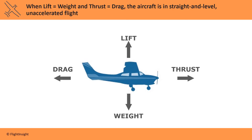For example, a 2,000 pound aircraft producing 2,000 pounds of lift will remain at the same altitude. And an aircraft producing, say, 200 pounds of thrust and experiencing 200 pounds of drag will stay at the same speed. This is when the four forces are in equilibrium.